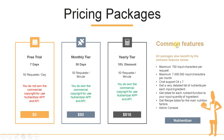Pricing packages. We have some common features for all packages: maximum 700 input characters per request, maximum 7 million input characters per month, chat support 24/7, a very detailed list of nutrients per each ingredient, totals for each nutrient as a function of your input quantity of ingredient, recipe totals for the main nutrients, and an admin console. For the free trial of 7 days you get 50 requests per day but do not own commercial copyright. For monthly and yearly tiers you get 50 requests per minute and you own the commercial copyright. Prices are US$80 and US$816 respectively.